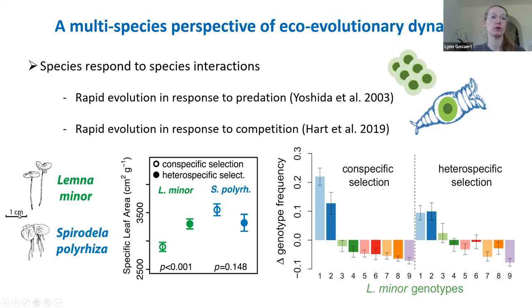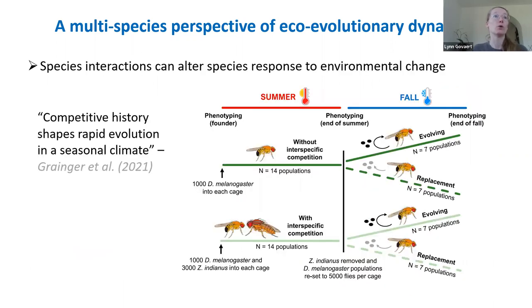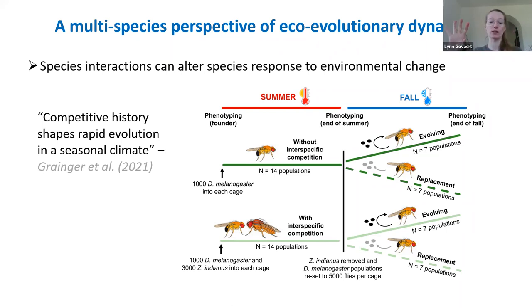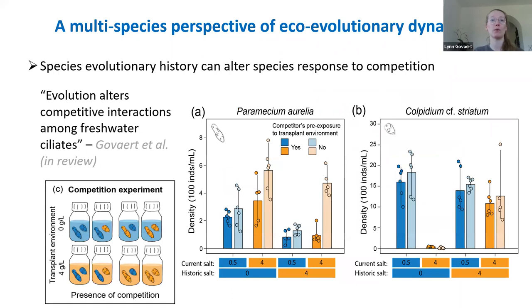For example, a study by Simon Hart used two different duckweed species, showing that allowing versus preventing evolution to competition resulted in different genotype compositions at the end of the experiment. A study by Des Granger showed that competitive history shapes rapid evolution in a seasonal climate — using Drosophila populations in the absence versus presence of competition, they found individuals differently respond to future environmental changes.